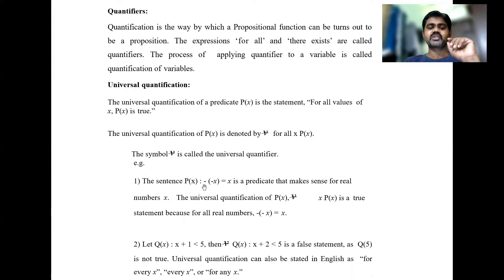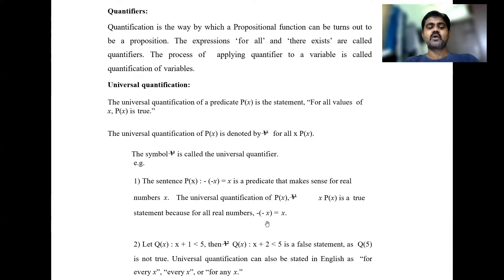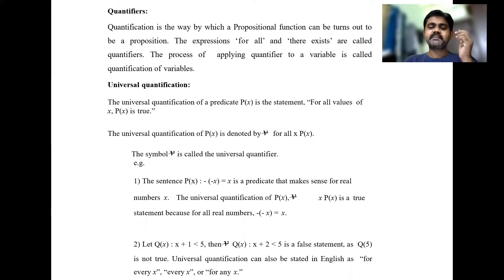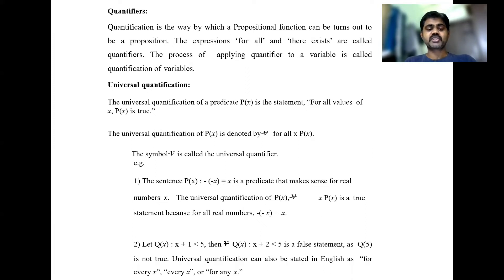Consider the sentence p(x): '−(−x) = x', which makes sense for real numbers x. The universal quantification of p(x) states 'for all x, p(x) is true', meaning for all real numbers, −(−x) equals x, which is positive x. So p(x) is called a predicate because we have not yet substituted any value. Until we substitute a value it is called a predicate; when we substitute a value it is converted to a proposition.